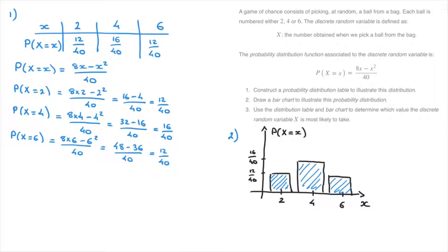For question three, we use the table and bar chart to determine which value X is most likely to take. From the table, the value with the highest probability is 4, with P(X = 4) = 16/40. From the bar chart, the tallest bar also corresponds to 4. So the value that capital X is most likely to take is X = 4. We now know how to construct probability distribution tables and illustrate them using probability distribution bar charts.